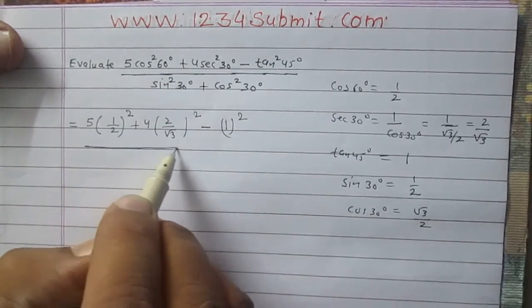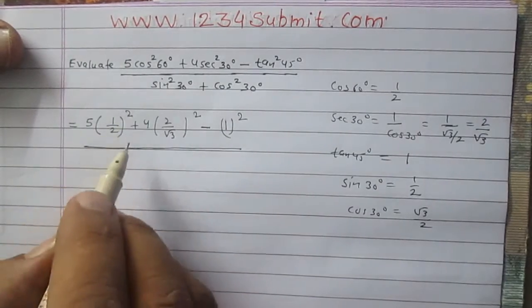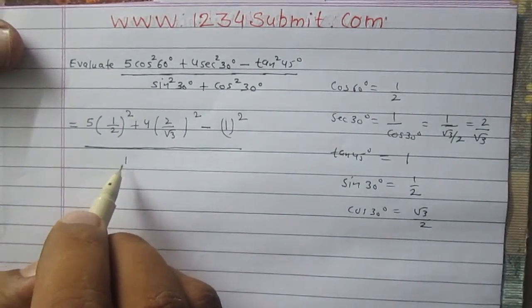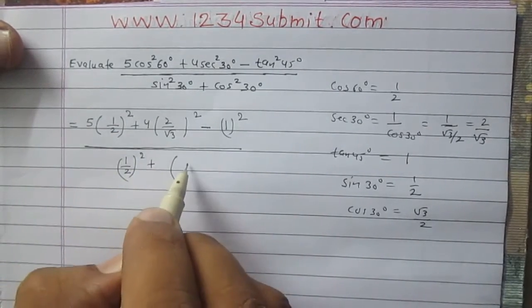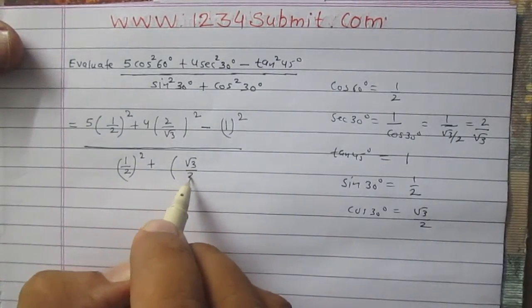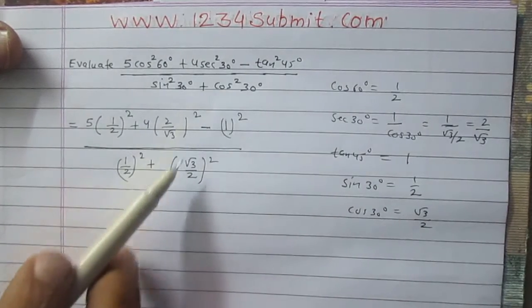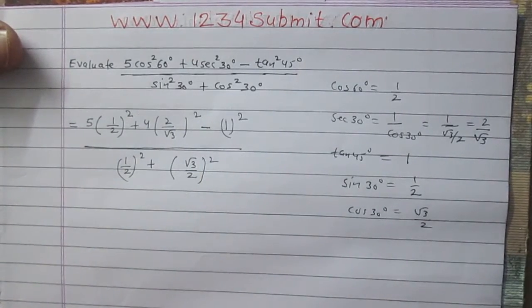For the denominator you will have sin square 30 degree, so it is 1 upon 2 square, and then square root of 3 by 2 square, that is cos 30 degree square.